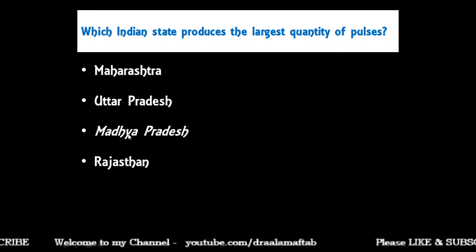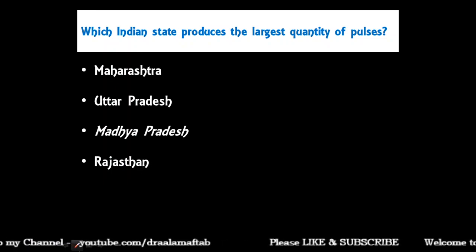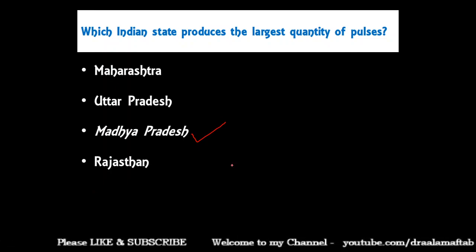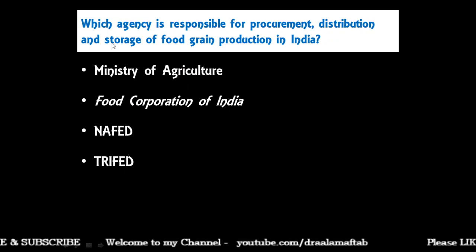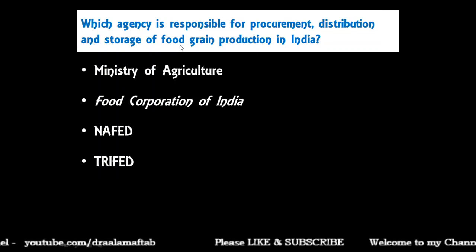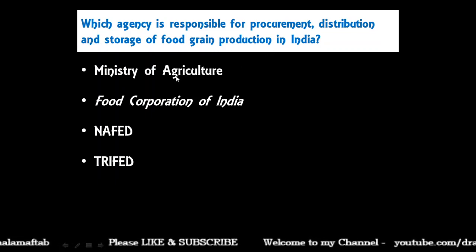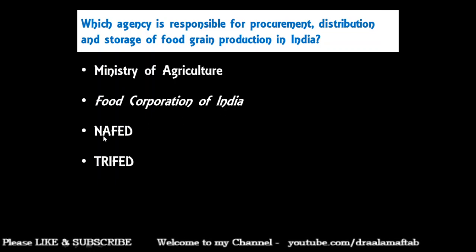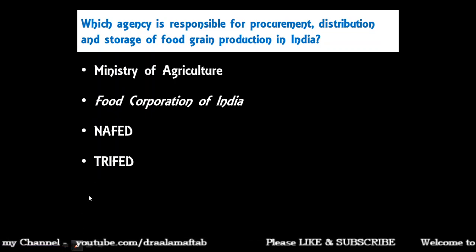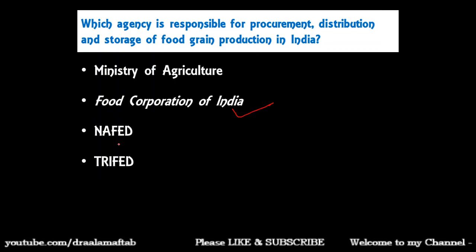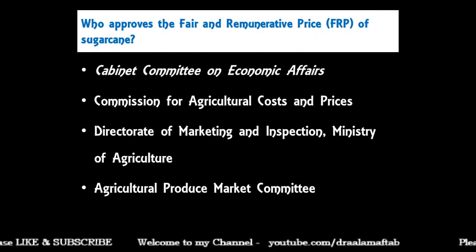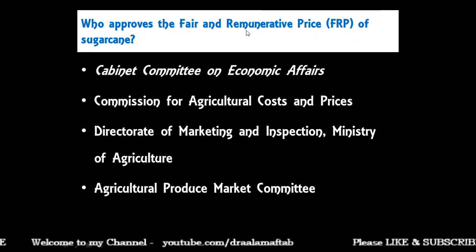Which Indian state produces the largest quantity of pulses — Maharashtra, Uttar Pradesh, Madhya Pradesh, or Rajasthan? The correct answer is Madhya Pradesh. Question three: which agency is responsible for procurement, distribution, and storage of food grain in India? The correct answer is Food Corporation of India (FCI). NAFED and TRIFED are marketing agencies.